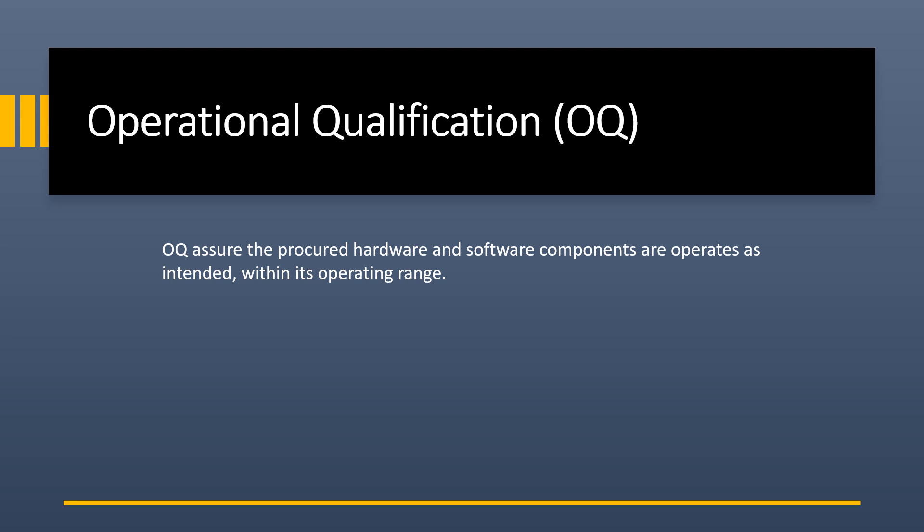The software and hardware must be configured so that when you give a command below or above this operating range, it should be restricted and provide an alert. When the command is within the operating range, the software and hardware accept and execute the process. I hope you understand.